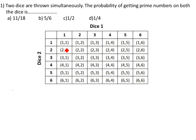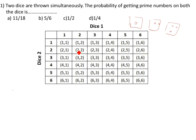This is dice 1 and dice 2. Dice 1 has 1, 2, 3, 4, 5, 6 and dice 2 also has 1, 2, 3, 4, 5, 6. We can write the outcomes as: 1,1  1,2  1,3  1,4  1,5  1,6; then 2,1  2,2  2,3  2,4  2,5  2,6; and similarly 3,1  4,1  5,1  6,1 and so on.